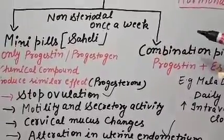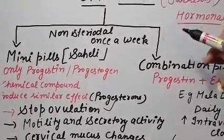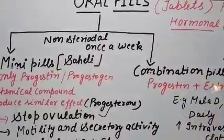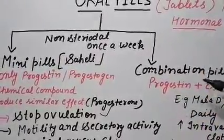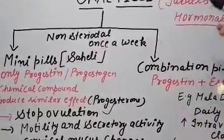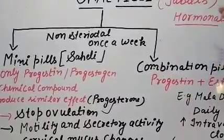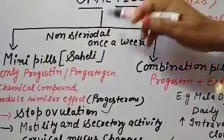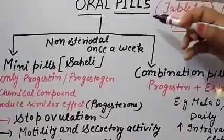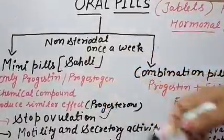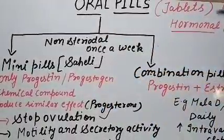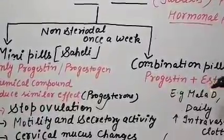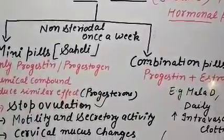It is important to remember that the emergency pill is not taken after that 72-hour window. These are not regular contraceptive methods — they are taken only during an emergency period. To summarize, oral pills are of two types: mini pills and combination pills, with the emergency pill as an additional option.